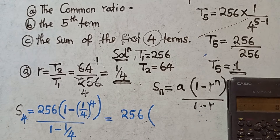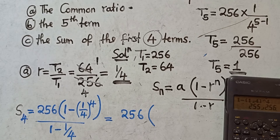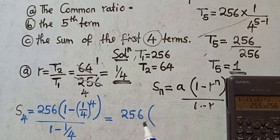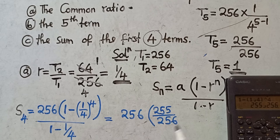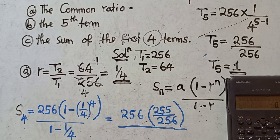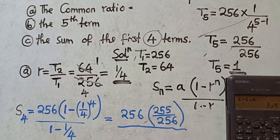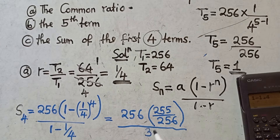Using a calculator: one minus one over four to the power four. The answer I am getting for the numerator bracket is 255 over 256. For the denominator, one minus one over four equals three over four.